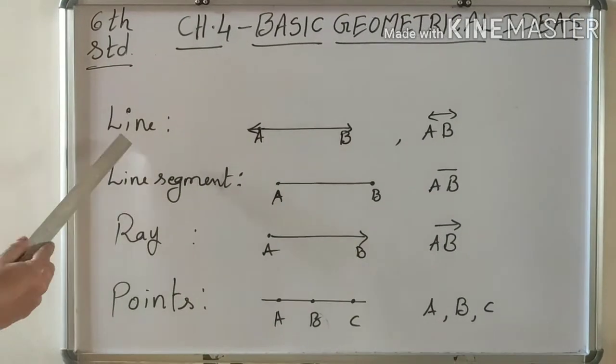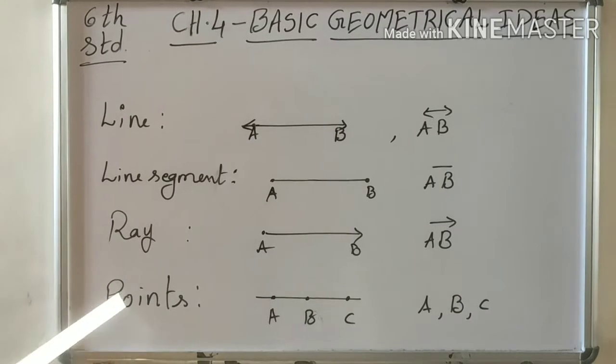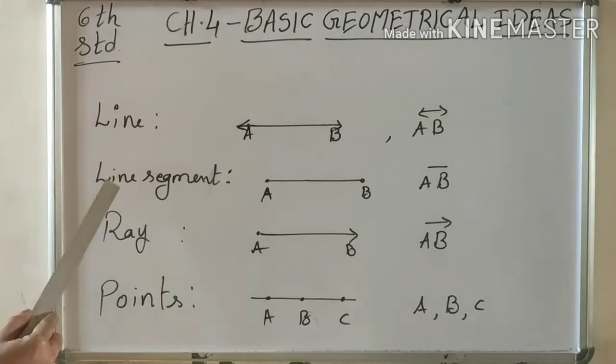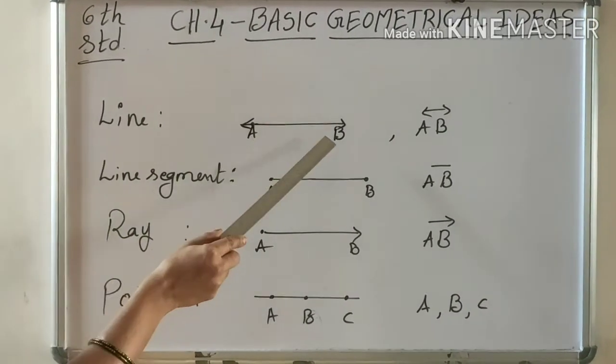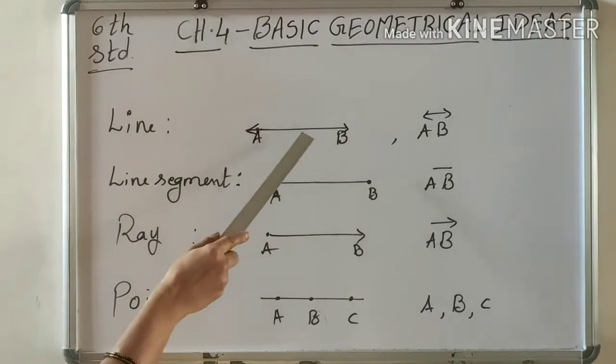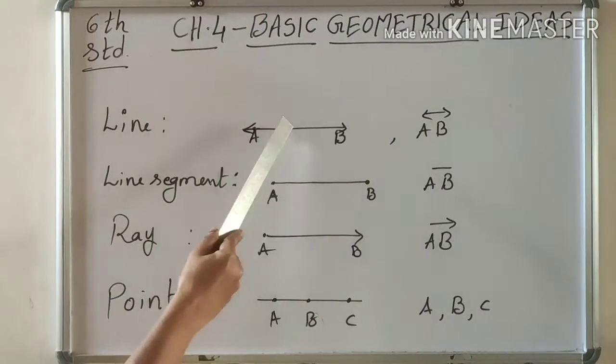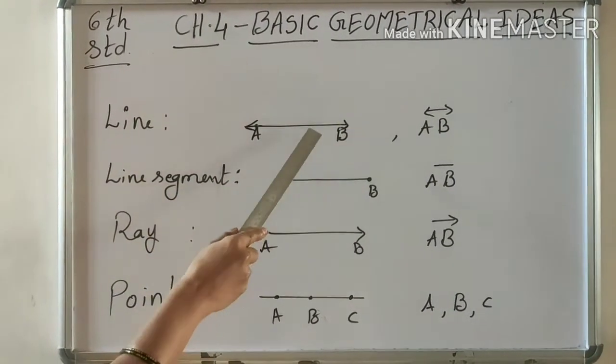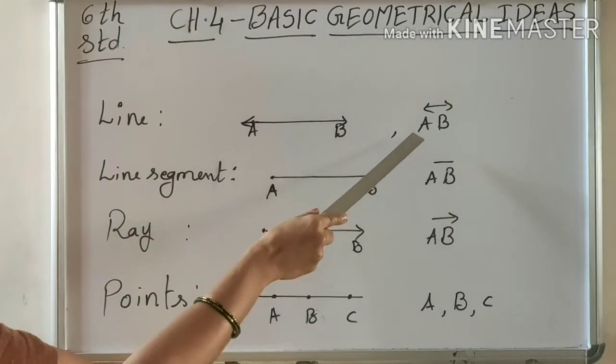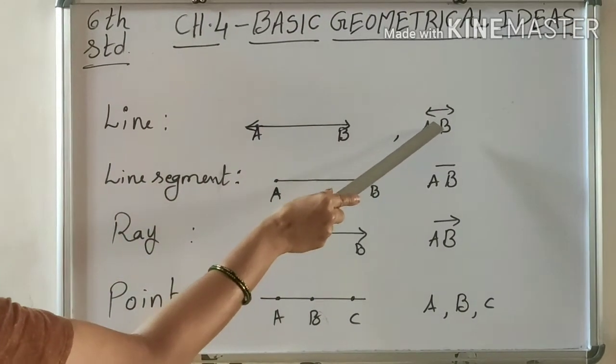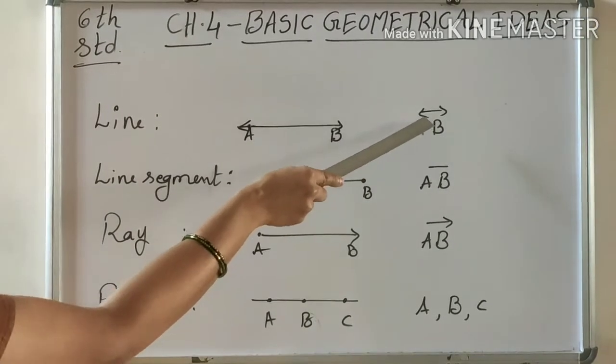We'll learn about line, line segment, ray, and points. What is a line? See how this is a line. It has no end. It continues infinitely in both directions. Here AB is a line. The line symbol is written like this: we write the letters with a line above them with arrows on both sides.